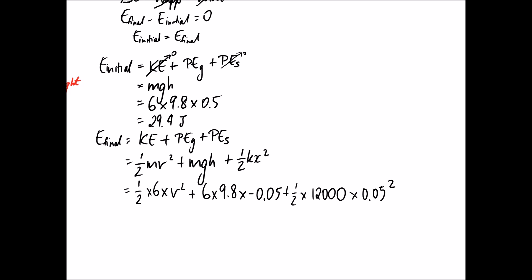If we simplify this down, this part becomes 3v squared, and all of these numbers on the right can be simplified to about 12.06. That becomes our final energy equation.